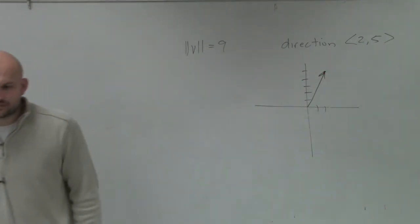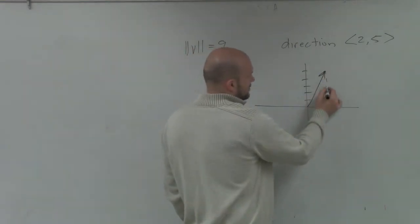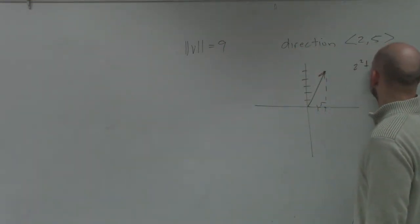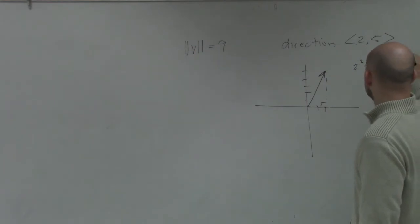Now, does that have a length or magnitude of 5? Well, let's double check. If we were to create a right angle, that would be 2 squared plus 5 squared equals c squared.